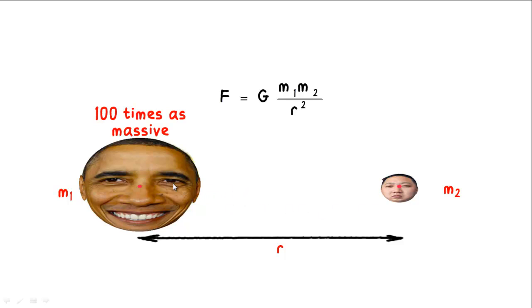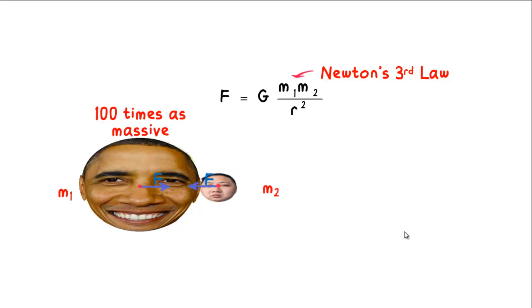Of course not. The gravitational pull that the two of them exert on each other are action and reaction pairs. According to Newton's third law, these two forces are equal in magnitude but opposite in direction. But of course, even though the force is the same, Obama being 100 times as massive is going to have an acceleration that's only 1% of Kim Jong-un's acceleration. So it's going to look as if it's only Kim Jong-un who is sucked towards Obama.